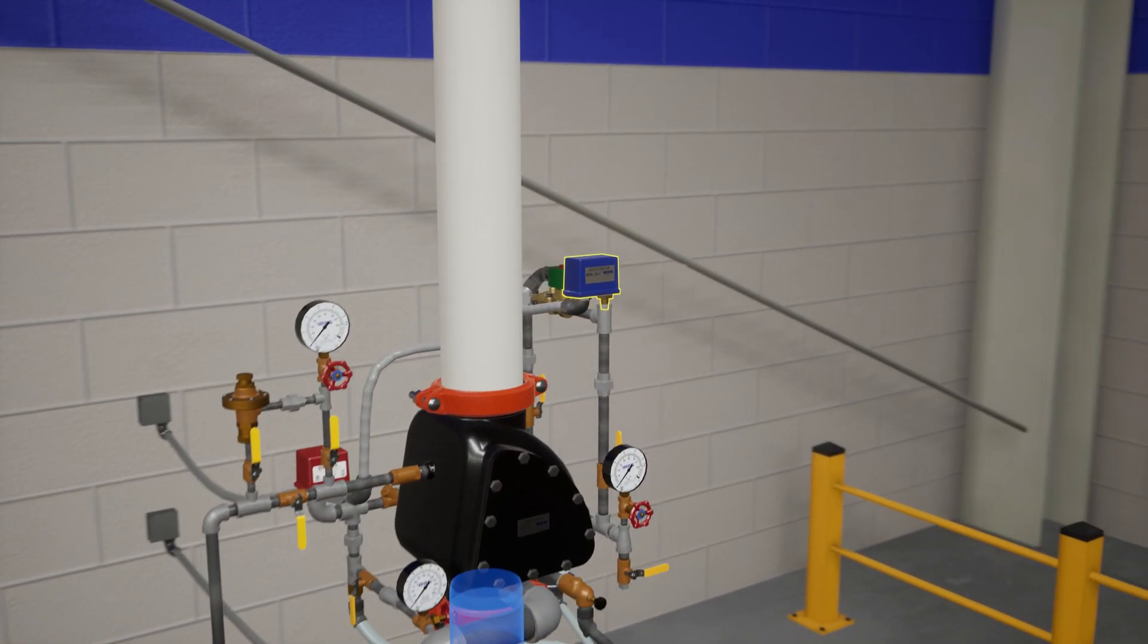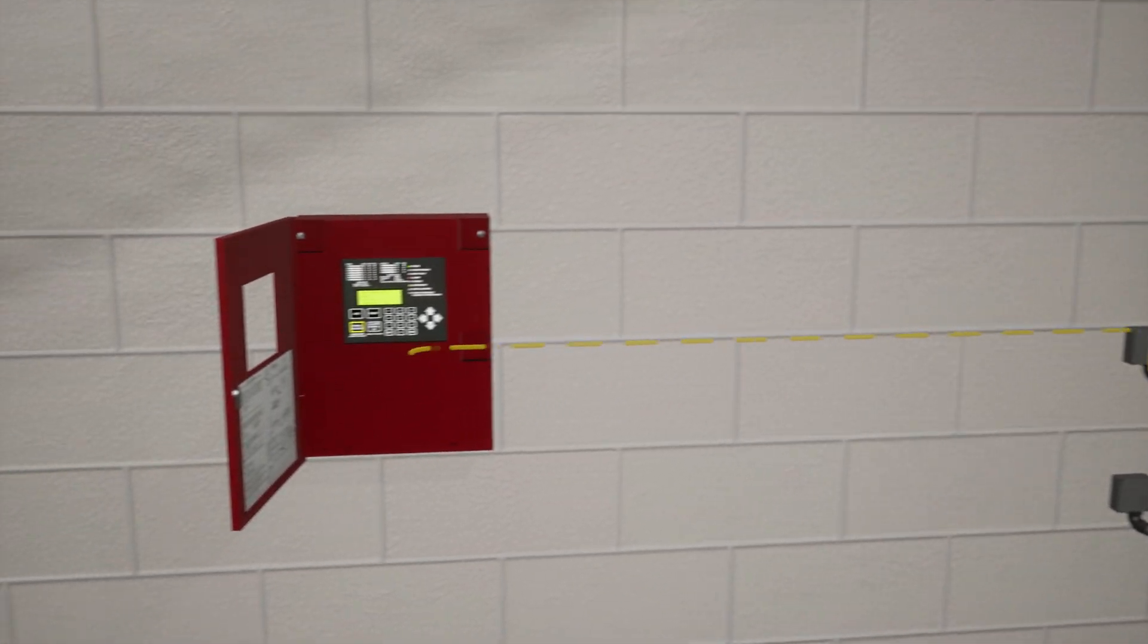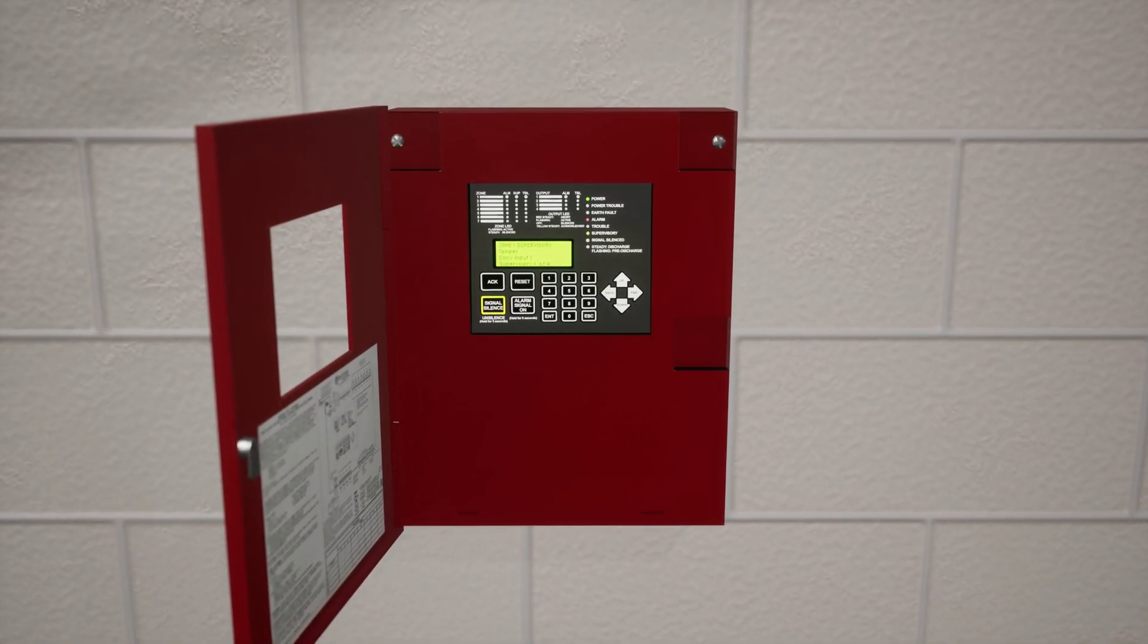Once pressure is released, the EA-1 will send a signal to the VFR 500, reactivating the buzzer. This isn't required, but we are going to silence the panel once again. Press the silence button on the VFR 500 release control panel.